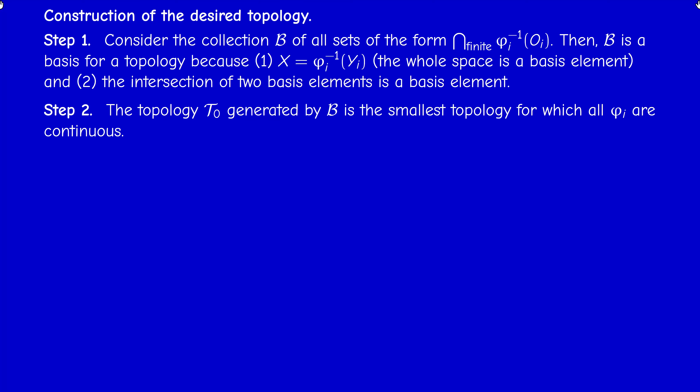Therefore, B generates a topology T0. We have two equivalent ways of describing T0: either for every x in U we can find a basis element containing x and contained in U, or equivalently, any element U of T0 is a union — not necessarily finite — of elements of the basis.